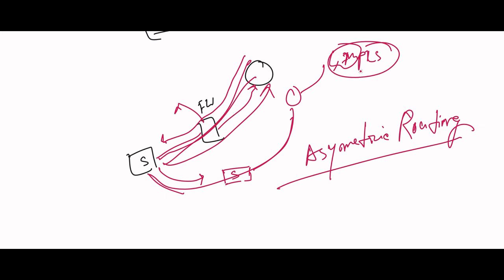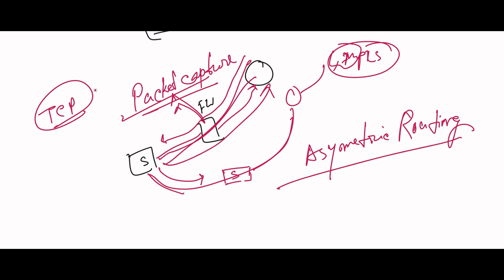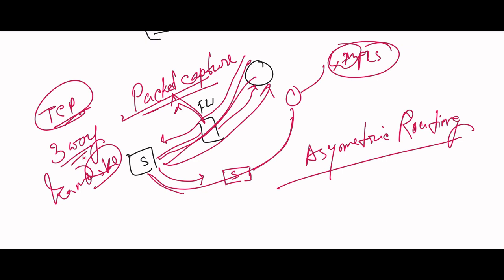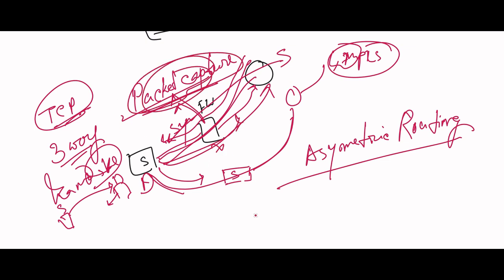With asymmetric routing, even if the source and destination rules exist in the firewall, you may not see the logs properly — you might see 'accepted' but communication still fails. If you do a packet capture, you can see the return traffic issue. For TCP's three-way handshake, the SYN packet goes from source to destination but the SYN-ACK never comes back, which packet capture reveals.